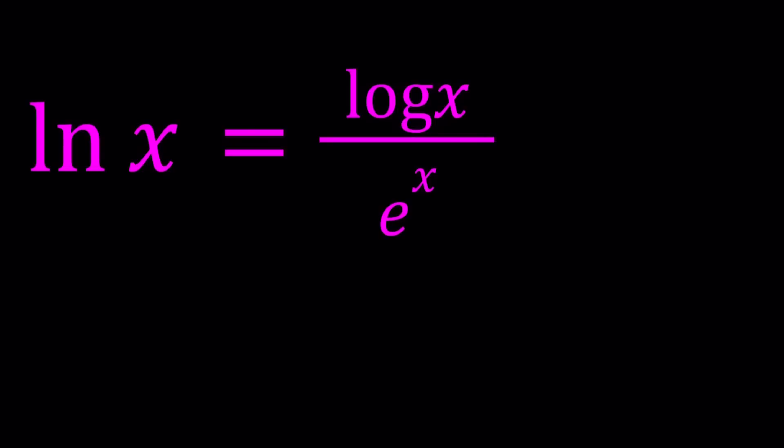So what can we do? Cross multiply both sides. We get e to the x ln x equals log x. At this point there's a couple different possibilities. You can ln both sides which is not going to be very helpful because you're going to get ln log x and ln ln x. It could be helpful, I don't know. Or you could try the Lambert's W function or something else. I'm going to be doing something else.